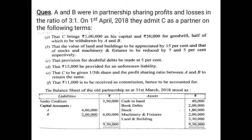Point D: Rs 15,000 to be provided for an unforeseen liability — a liability which was not recorded beforehand. Recording it now increases the liability, so Rs 15,000 is shown on the debit side of the revaluation account. The entry is: revaluation account debited to unforeseen liability account Rs 15,000, because it is an increase in liability.